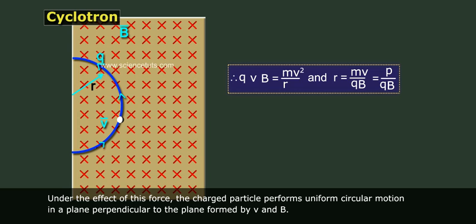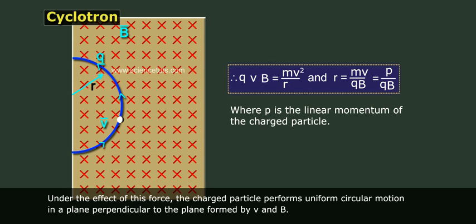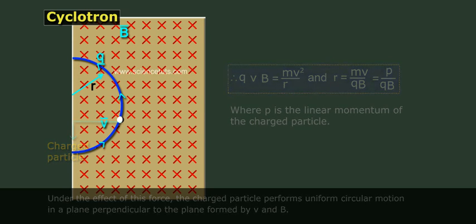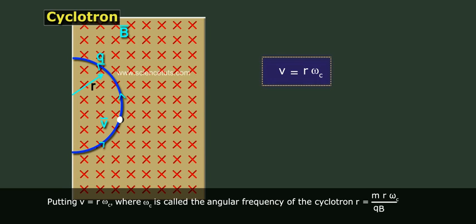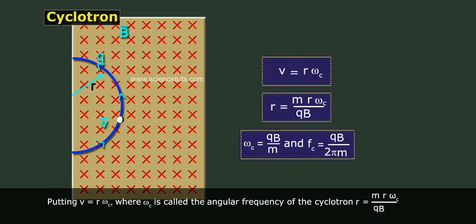Therefore Q v B equals M v squared by R and R equals M v by Q B equals P by Q B where P is the linear momentum of the charged particle, putting v equals R omega C where omega C is called the angular frequency of the cyclotron. R equals M R omega C by Q B. Omega C equals Q B by M and F C equals Q B by 2 pi M.